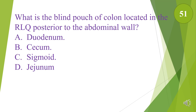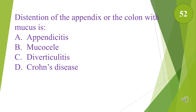What is the blind pouch of the colon located in the right lower quadrant posterior to the abdominal wall? A. Duodenum. B. Cecum. C. Sigmoid. D. Jejunum. The answer is B, cecum. Distention of the appendix or the colon with mucus is: A. Appendicitis. B. Mucocele. D. Diverticulitis. E. Crohn's disease. The answer is B, mucocele.